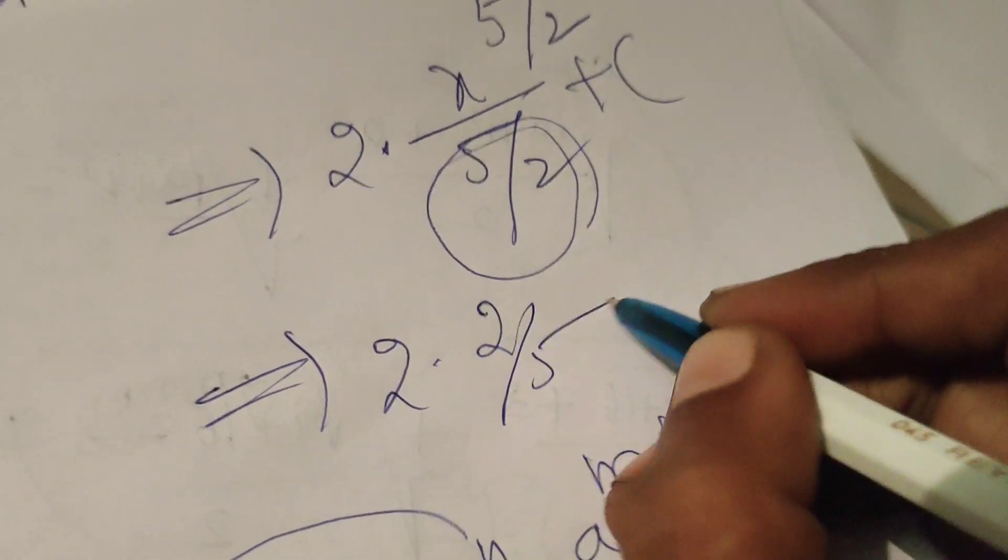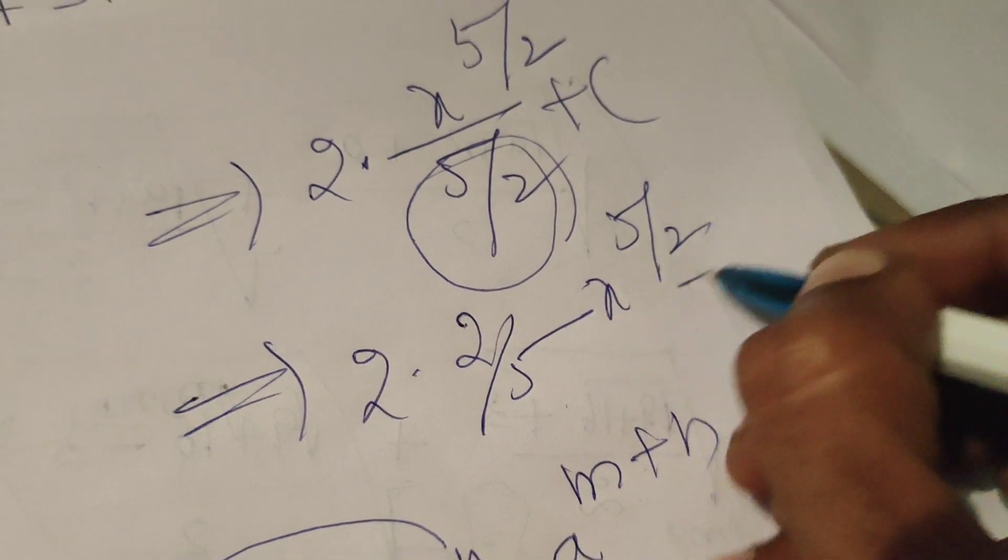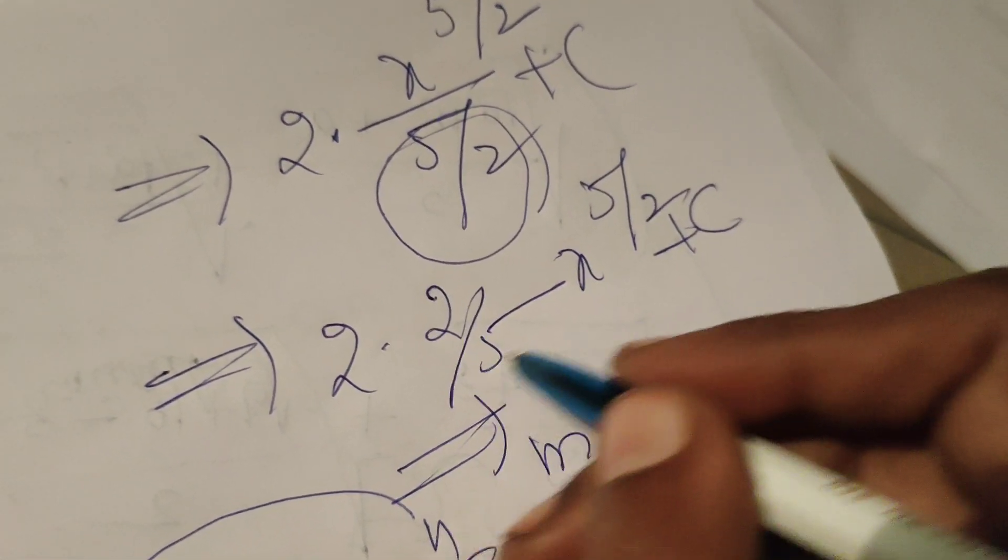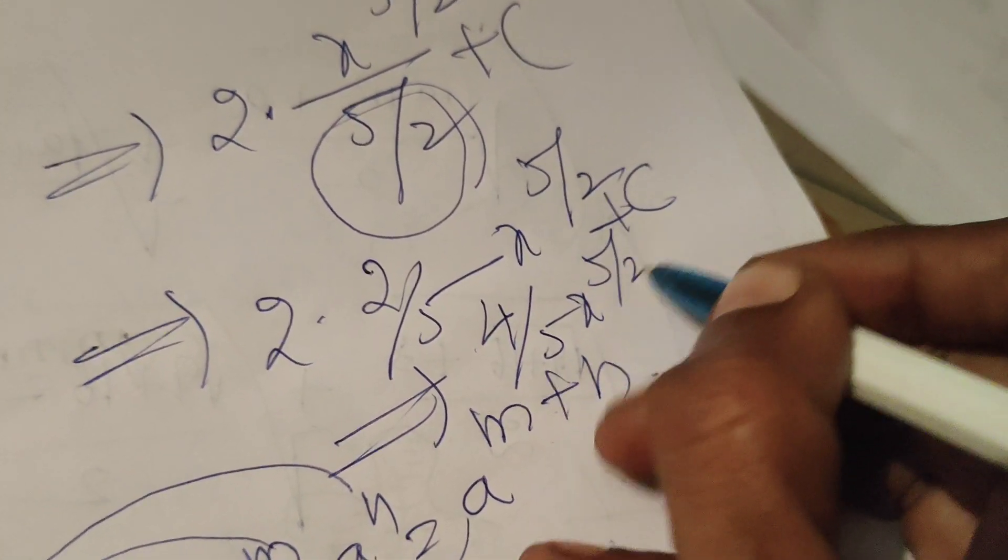We will get 2 transpose numerator that is 2 by 5 x power 5 by 2 plus C. That implies 4 by 5, x power 5 by 2 plus C.